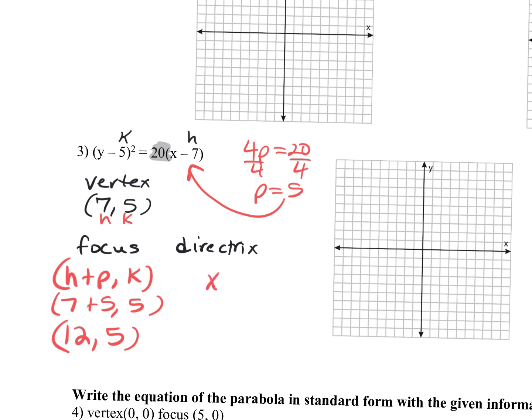The directrix is always an equation, and it uses the non-squared variable. So x equals — and then we take h, the x of the vertex, and subtract p. So h was 7, p is 5, so 7 minus 5: my directrix equation is x equals 2.